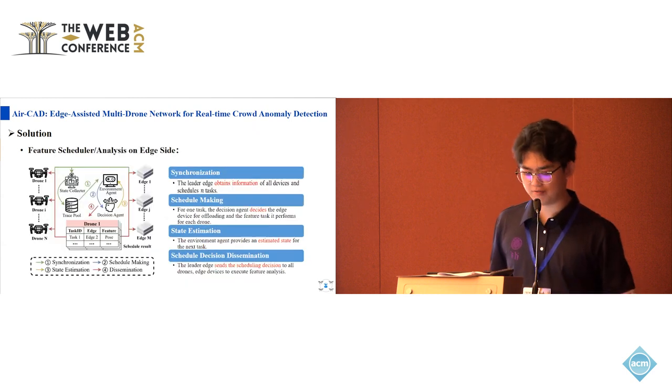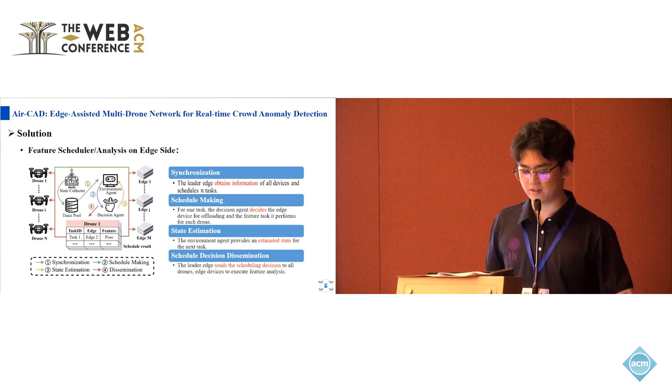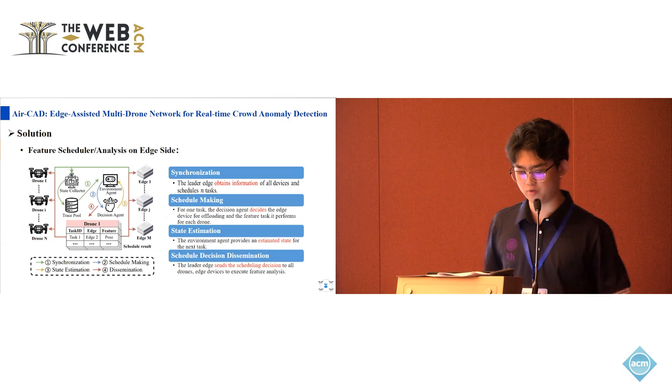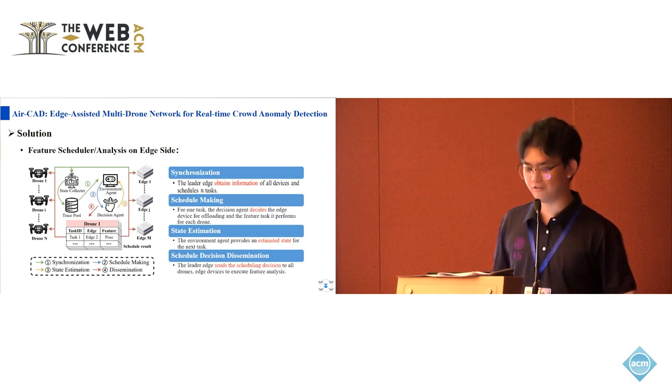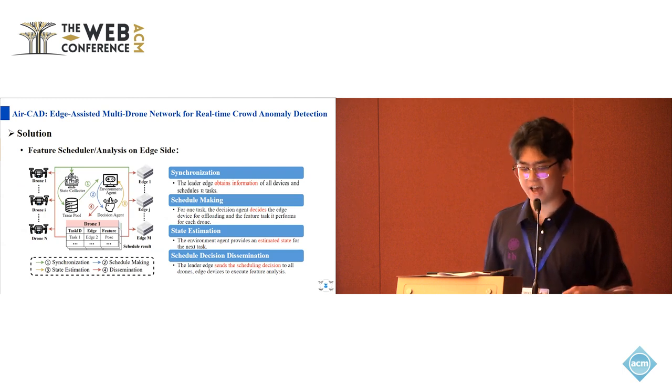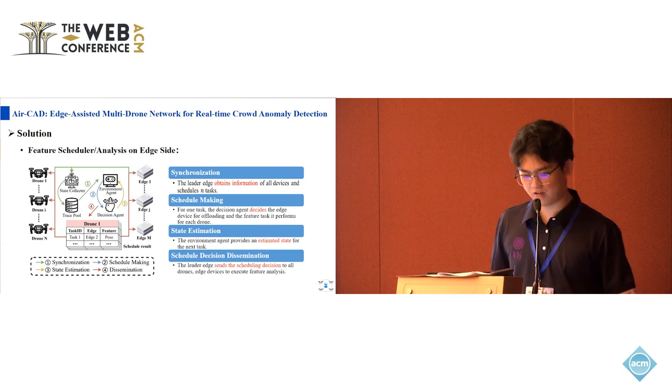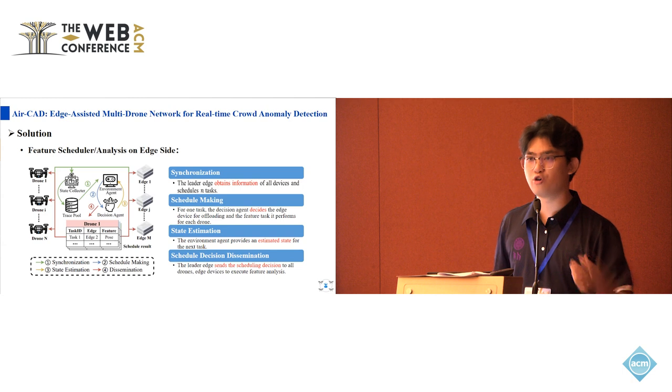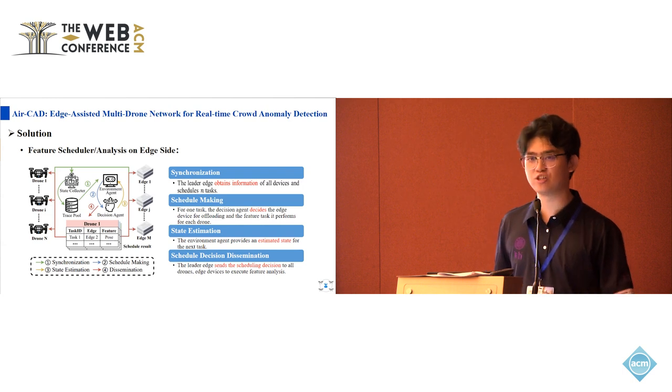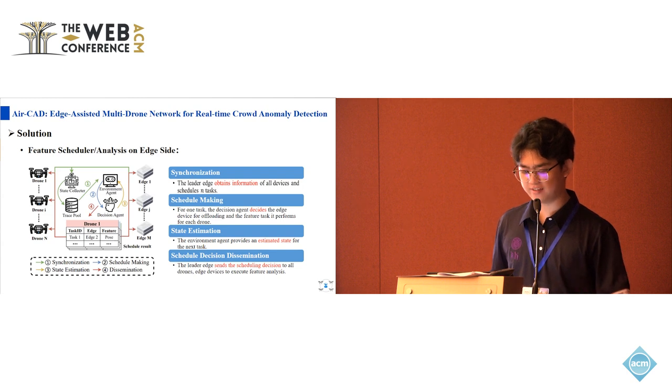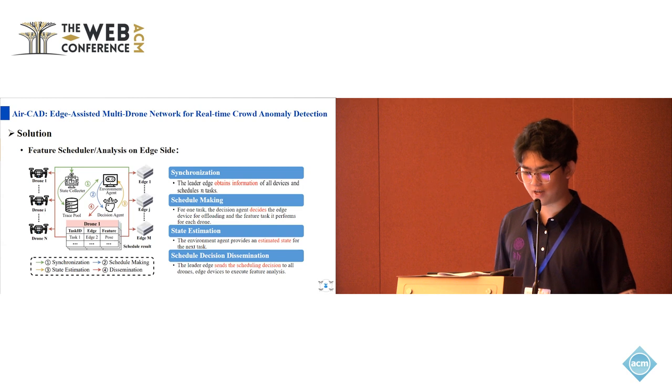For our multi-device system, we designed the feature scheduler to balance the workload of each device. The scheduler is mainly composed of a decision agent and an environment agent. The scheduling process has four steps. First, the leader edge obtains the information of all devices and schedules the following tasks. For one task, the decision agent will make a decision for all drones, including the edge device for offloading and the feature task it will perform. Then, the environment agent will provide an estimated state for the next task. After all tasks are scheduled, the leader edge sends the scheduling decision to all devices to execute the feature analysis.